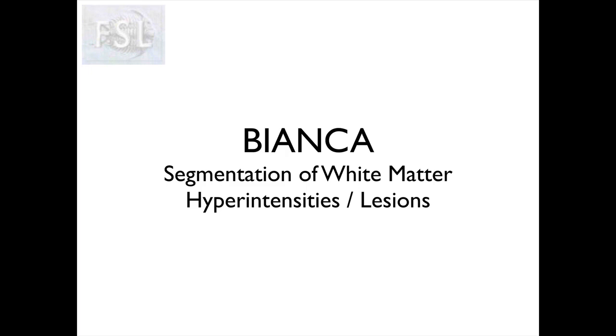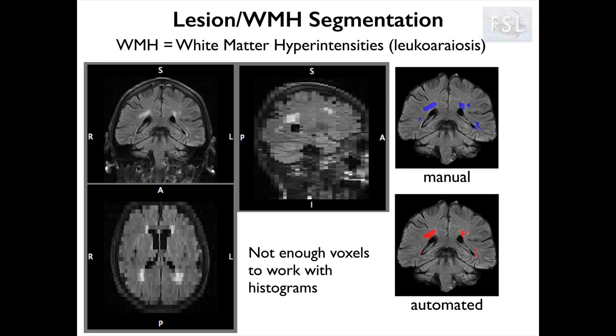My name is Ludovica Greffanti and in this video I will talk about the segmentation of white matter hyperintensities, or white matter lesions, with the FSL tool Bianca. Although Bianca can potentially be applied to different types of brain lesions, it was originally developed to segment white matter hyperintensities. These are areas in the brain that appear hyperintense — so bright — on T2-weighted and FLAIR images, and they are thought to be caused by a disruption of the microvasculature of the white matter, and in fact they are called white matter hyperintensities of presumed vascular origin.